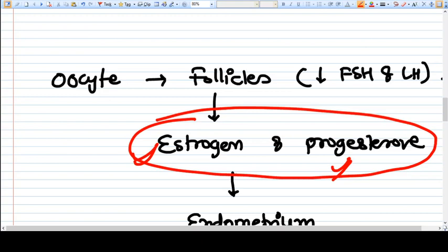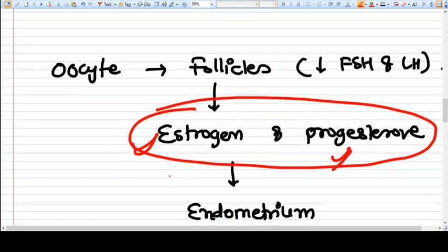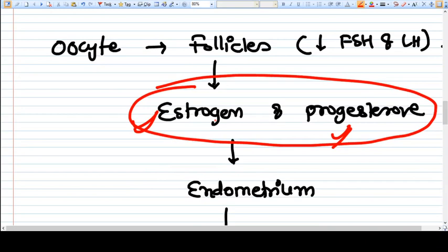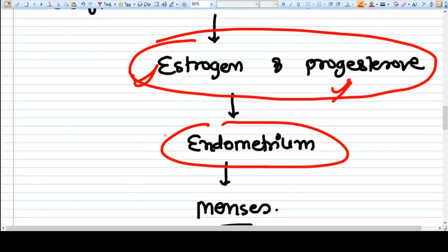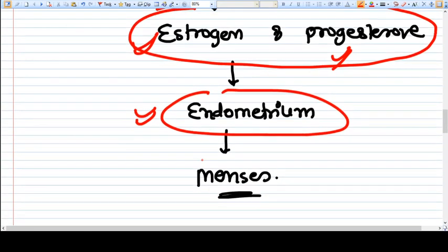The levels of estrogen and progesterone going down is the central part of menopause. What happens? Estrogen and progesterone are the reason why the endometrium is generated and shed every month. The cyclical increase and decrease in estrogen and progesterone is responsible for endometrium to develop and then at the end of the month it gets shed as menses.